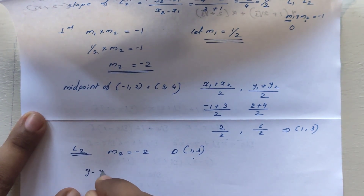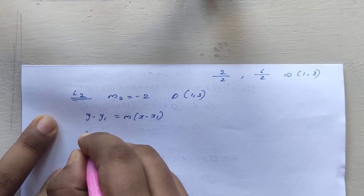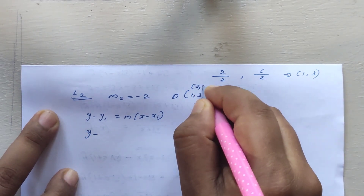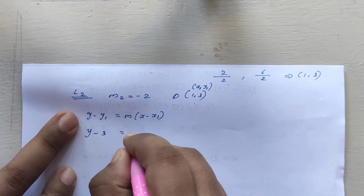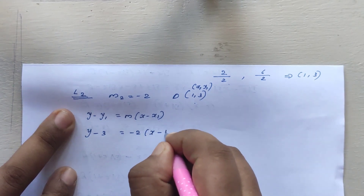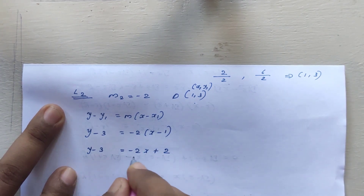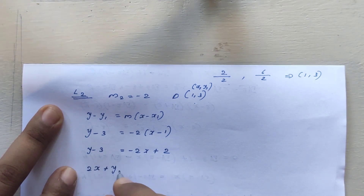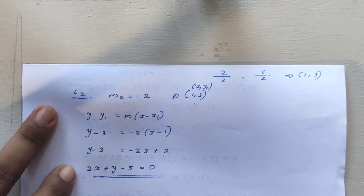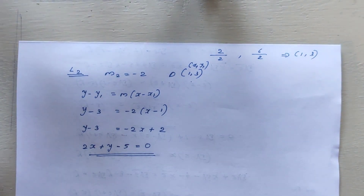Using point-slope form with point (1,3) and slope -2: y - y1 = m(x - x1), so y - 3 = -2(x - 1). Expanding: y - 3 = -2x + 2, giving 2x + y - 5 = 0. So the equation of the right bisector is 2x + y - 5 = 0.